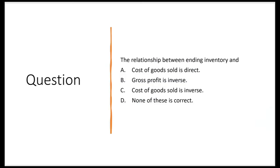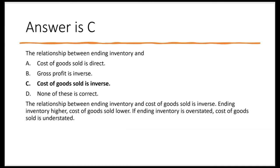Let's try a practice question. Is the relationship between ending inventory and cost of goods sold direct? No, it's inverse — as ending inventory goes up, cost of goods sold goes down. So A is out. Is the relationship between ending inventory and gross profit inverse? No, it's direct. So B is out. The relationship between ending inventory and cost of goods sold is inverse — yes, the answer is C.